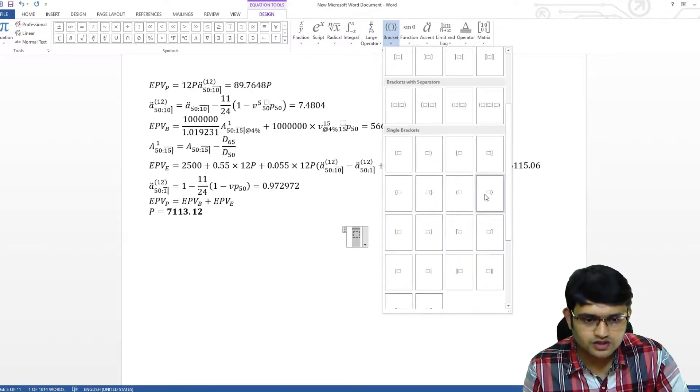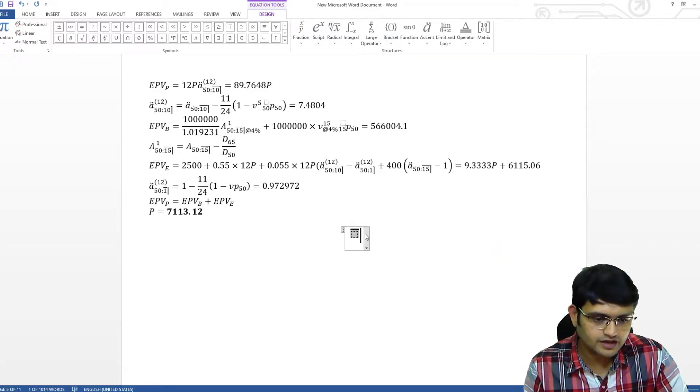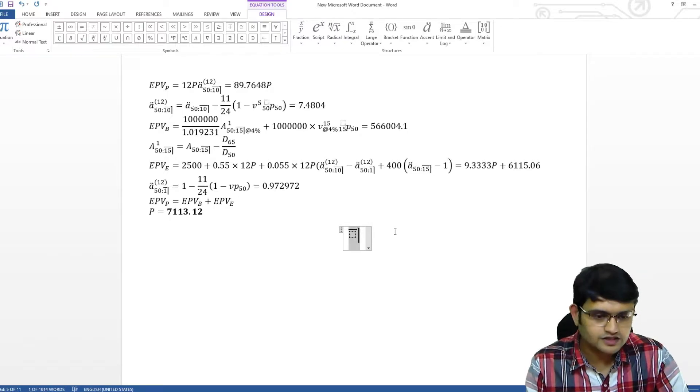go to brackets, down here in single brackets, we have this, we'll put that and then to space later on, I can select this, this is our annuity angle.